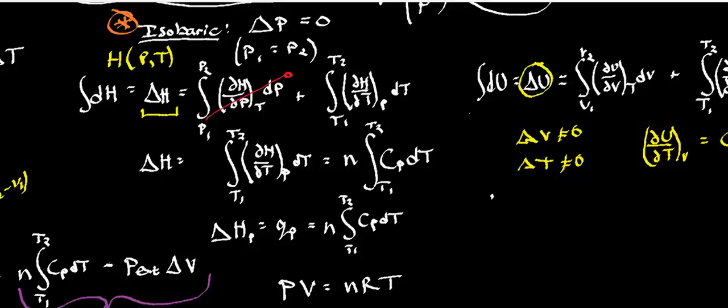Now, another identity you need to recognize is that the partial of H with respect to T at constant P is equal to CP, the heat capacity at constant pressure. So I'll take the heat capacity at constant pressure and substitute it in. The other thing that's nice about using this is pressure is not changing, it's constant. So dP right here is zero. So that means this whole term is zero.